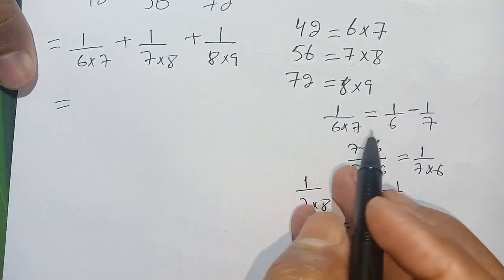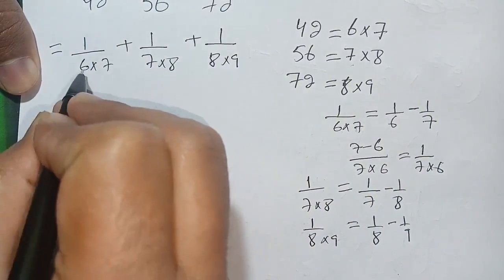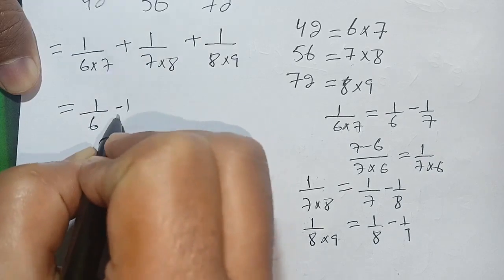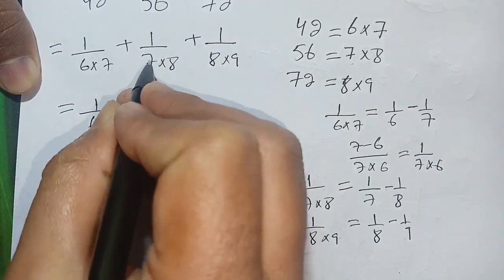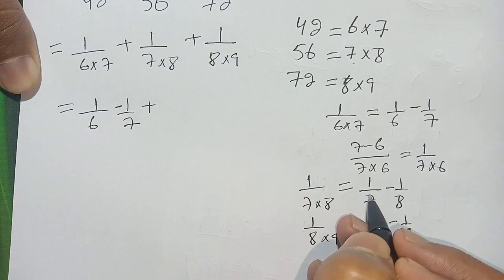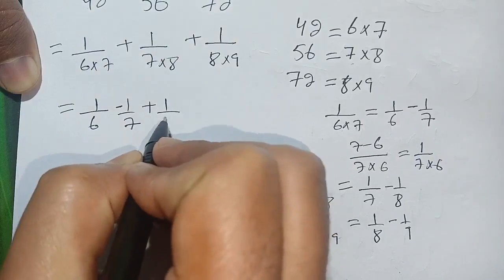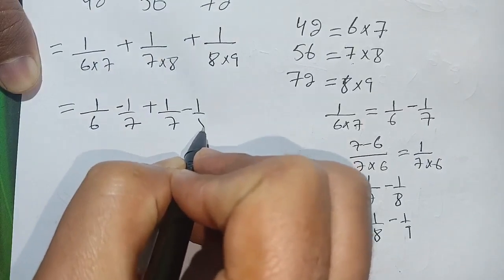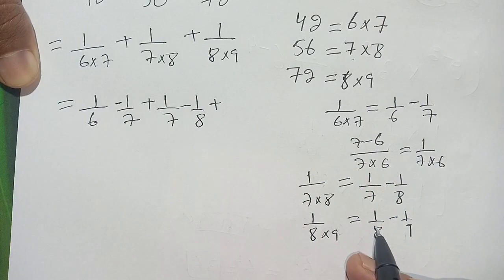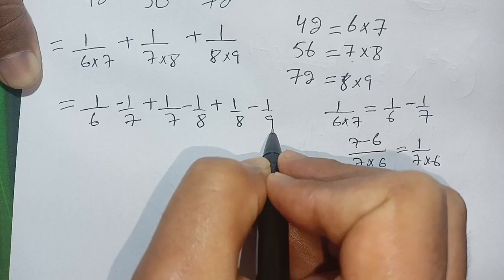Now replacing all these terms with the new terms: 1 divided by 6 times 7 is replaced by 1 divided by 6 minus 1 divided by 7, plus 1 divided by 7 times 8 replaced by 1 divided by 7 minus 1 divided by 8, plus 1 divided by 8 times 9 replaced by 1 divided by 8 minus 1 divided by 9.